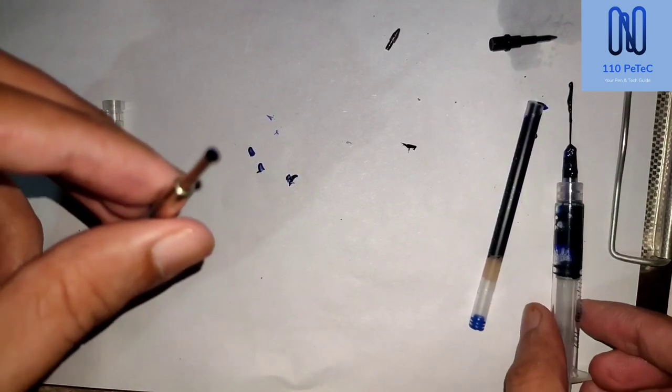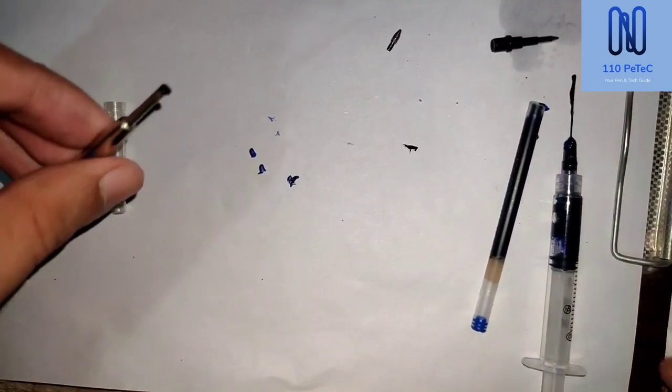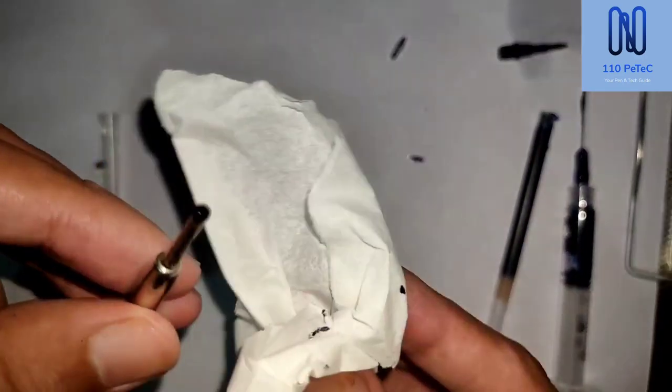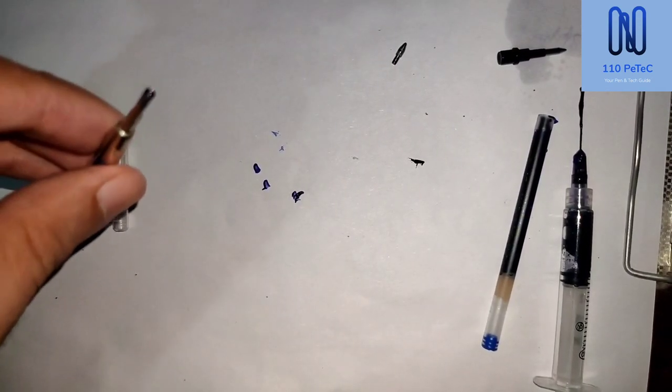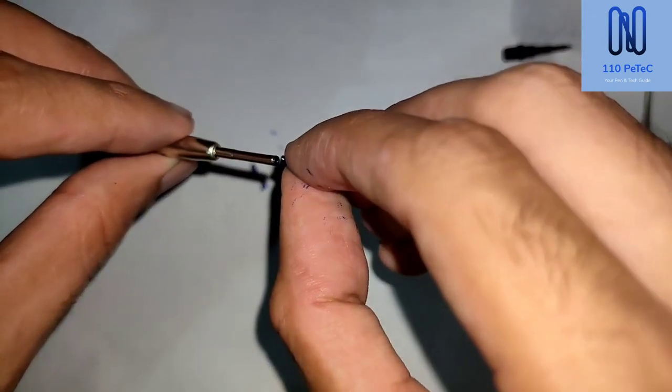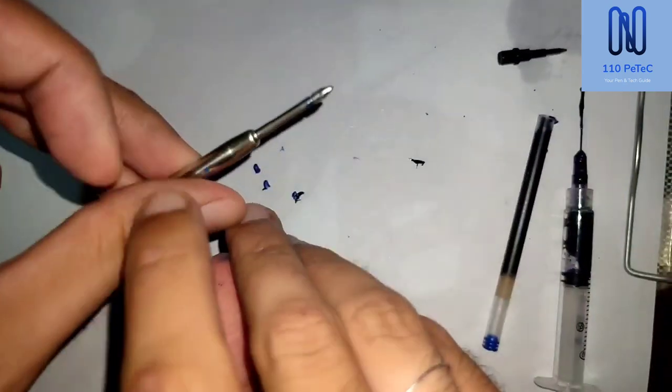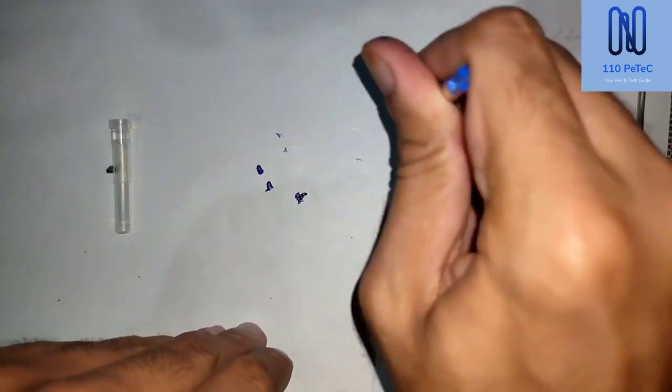Putting the refill on it. Wiping it out, cleansing the upper part, and now pushing the nib or point inside it and then applying pressure where it gets fit inside it totally.